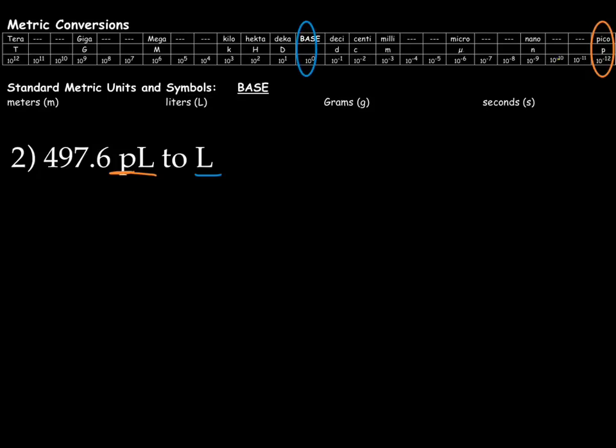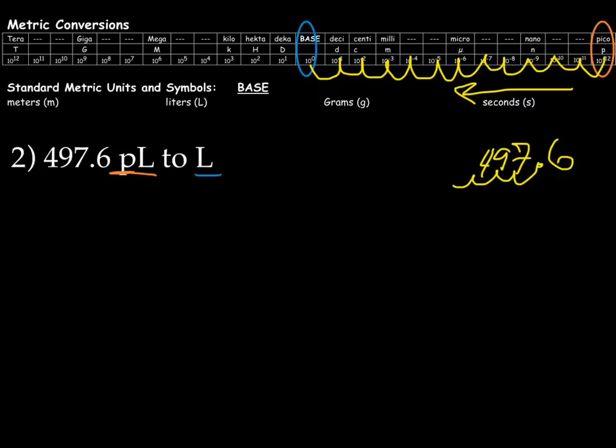Let's count the number of times we have to move. One, two, three, four, five, six, seven, eight, nine, ten, eleven, twelve. Twelve times. So we have 497.6. We have to move twelve times, but this time we're going to go to the left because the one we know about is on the right and we're moving to the left. So, twelve times. One, two, three, four, five, six, seven, eight, nine, ten, eleven, twelve. Goodness gracious.